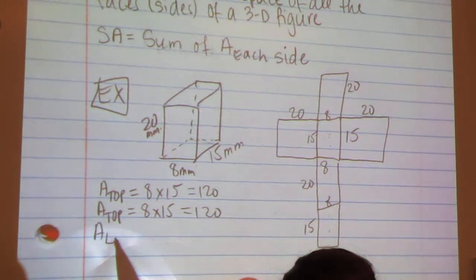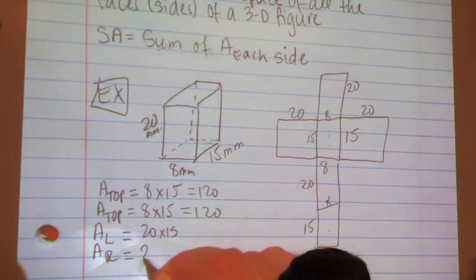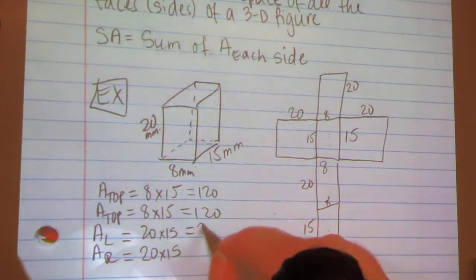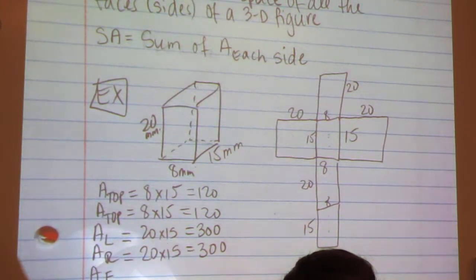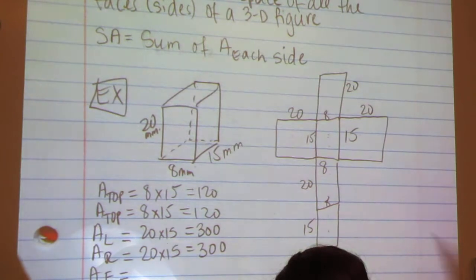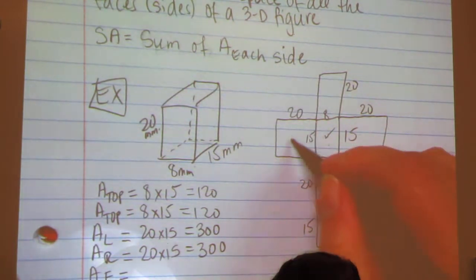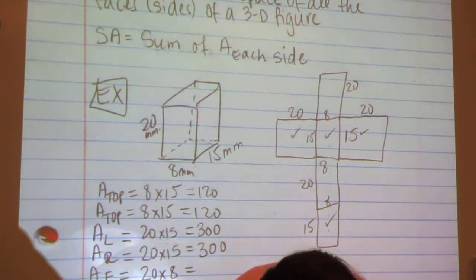Then I want the area of the left panel and the area of the right panel, which are identical. The left and the right, they're both 20 by 15. And 20 times 15 is 300. And then I want the area of the front and the area of the back. They're the only ones I haven't used yet. I now have left the 20 by the 8, and 20 times 8 is 160.